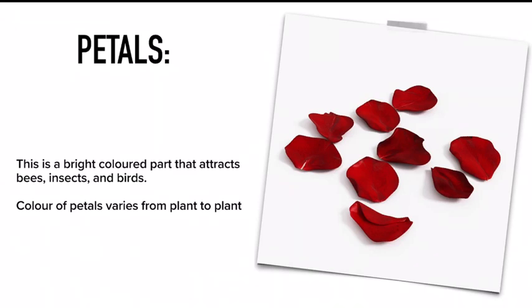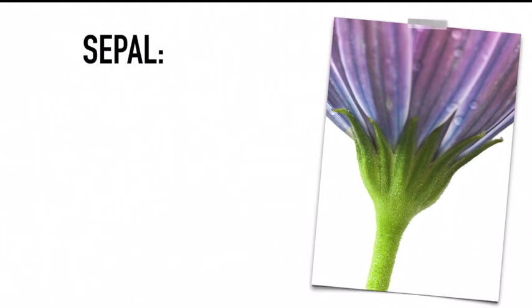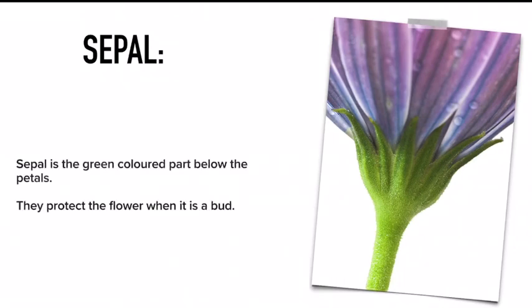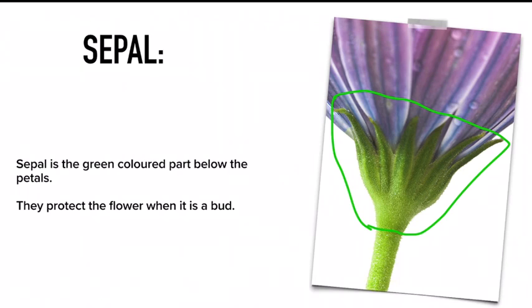The next part is the sepal. The sepal is the green colored part below the petals. As you can see in this diagram, the sepal protects the flower when it is a bud — when the flower is young, the sepal is used to protect it.